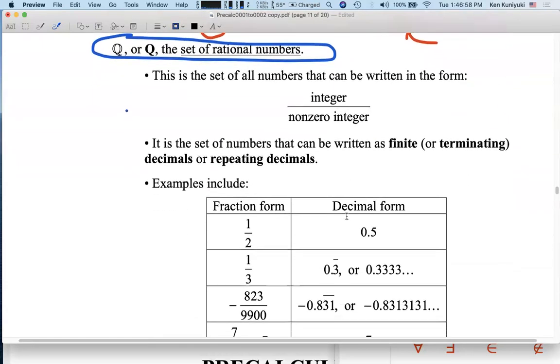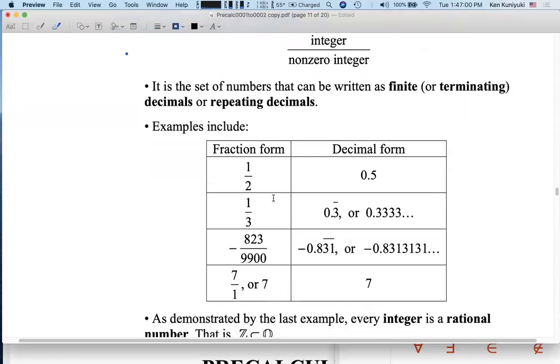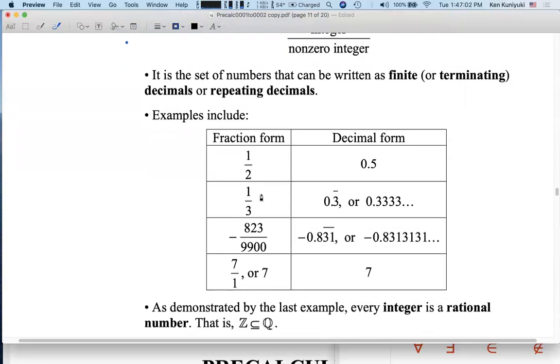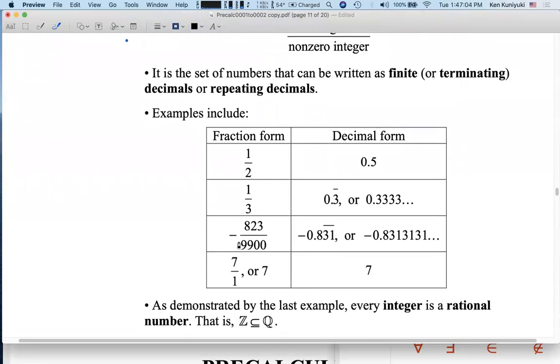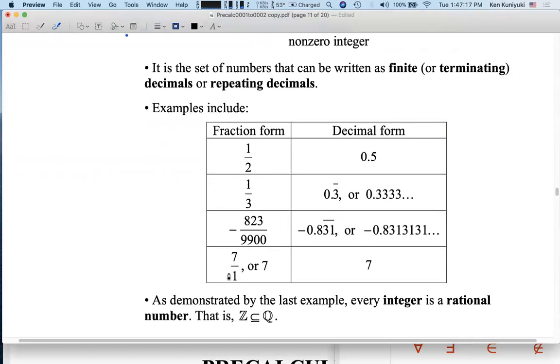So, for example, fractions such as one-half, one-third, this ugly thing, negative 823 over 9,900. And even 7, because 7 can be written as the fraction 7 over 1. Every integer is a rational number.